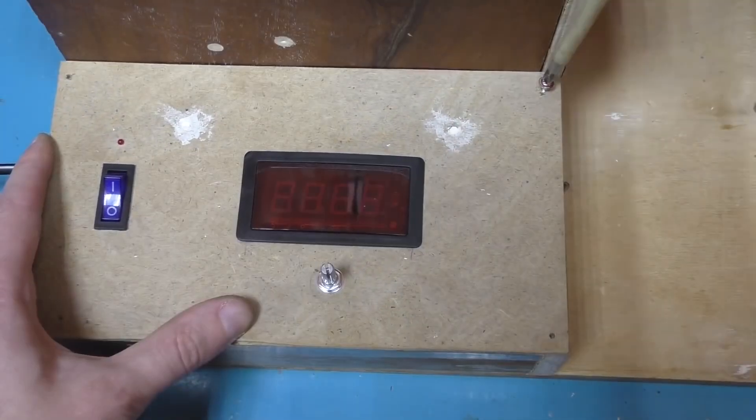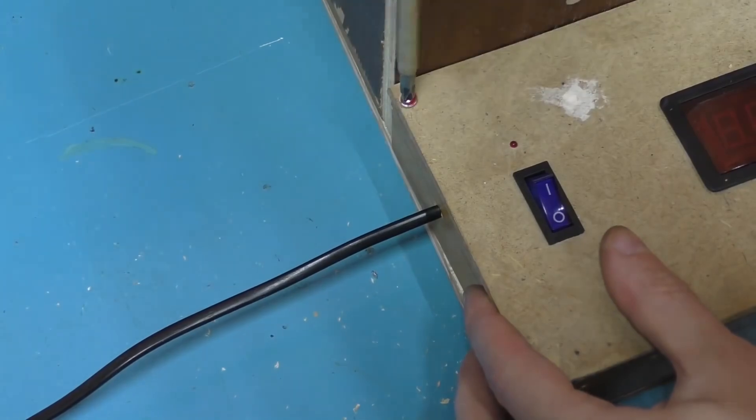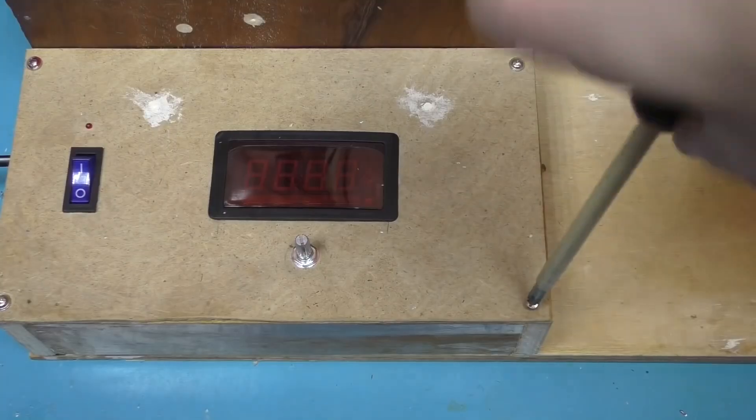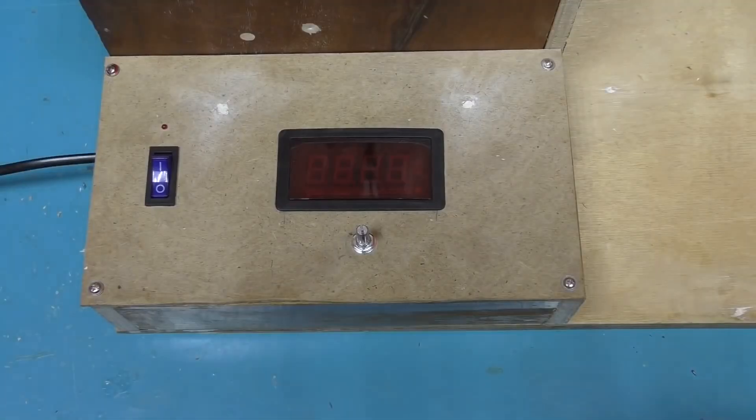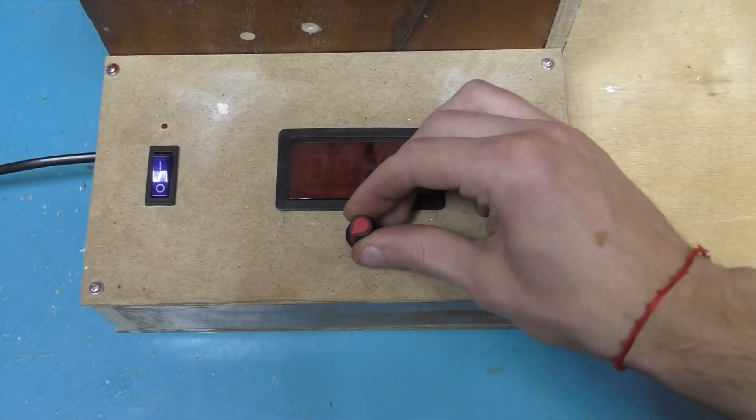That's it, now screw the cover on. Now you can put the knob on the variable resistor.